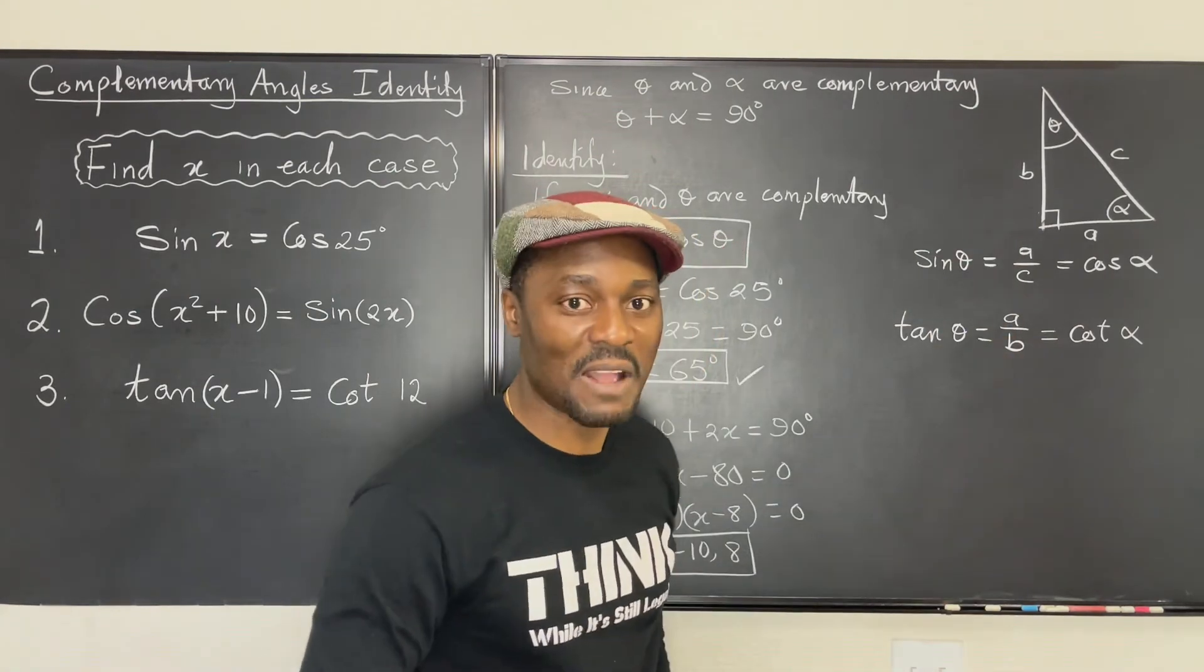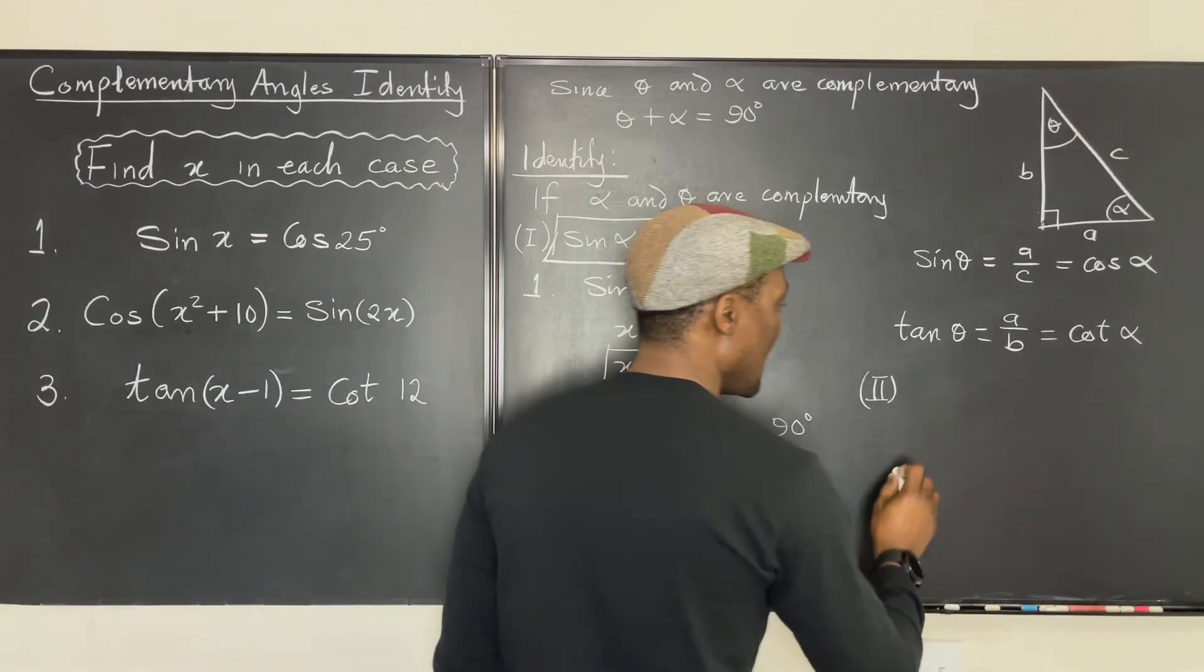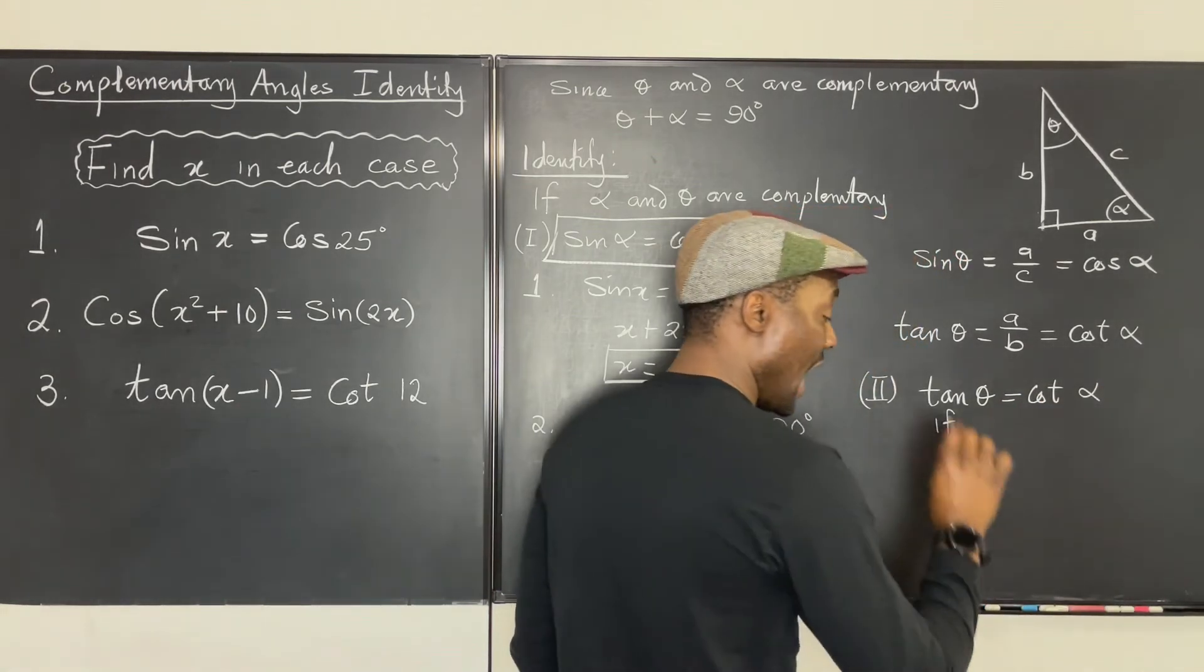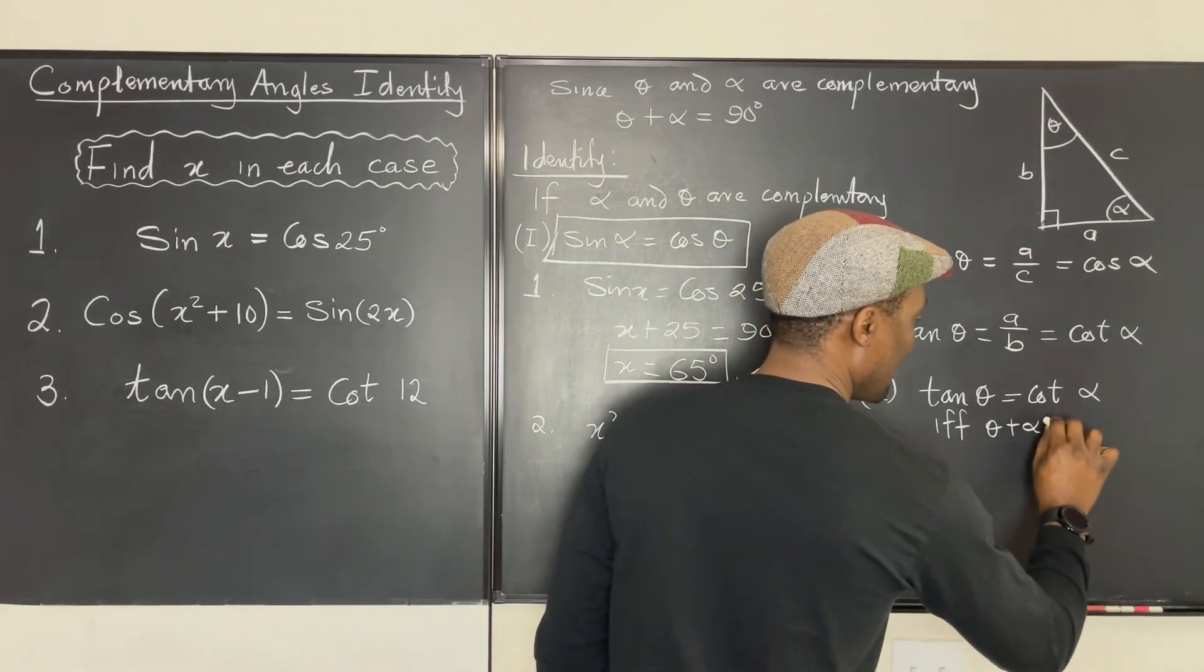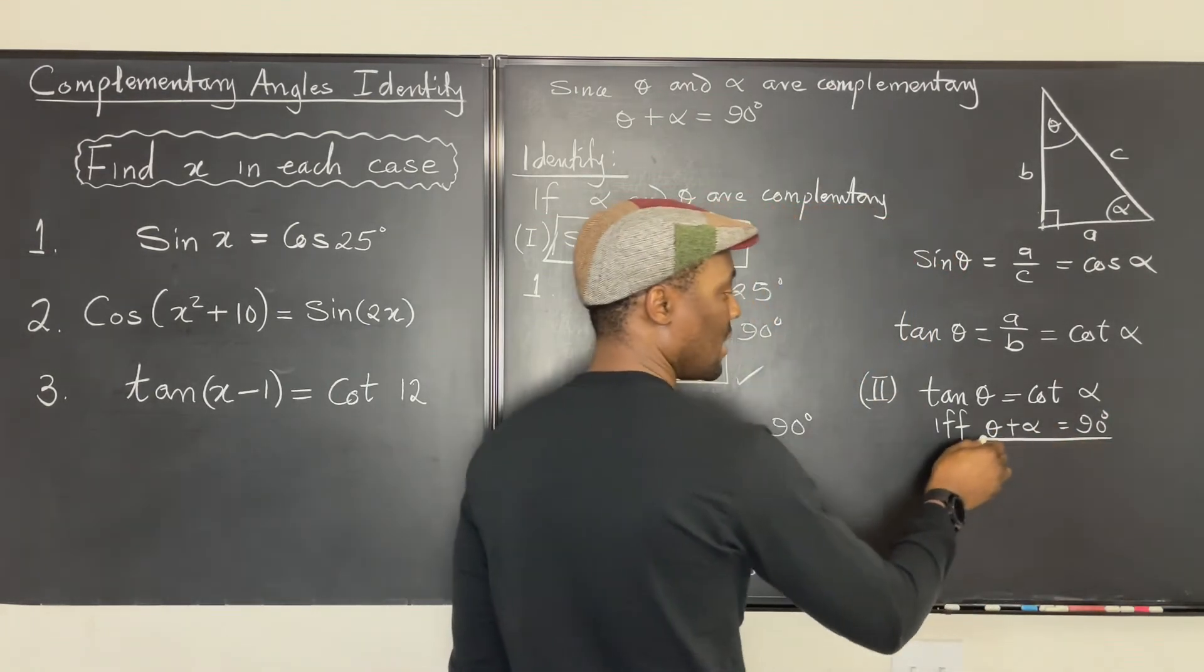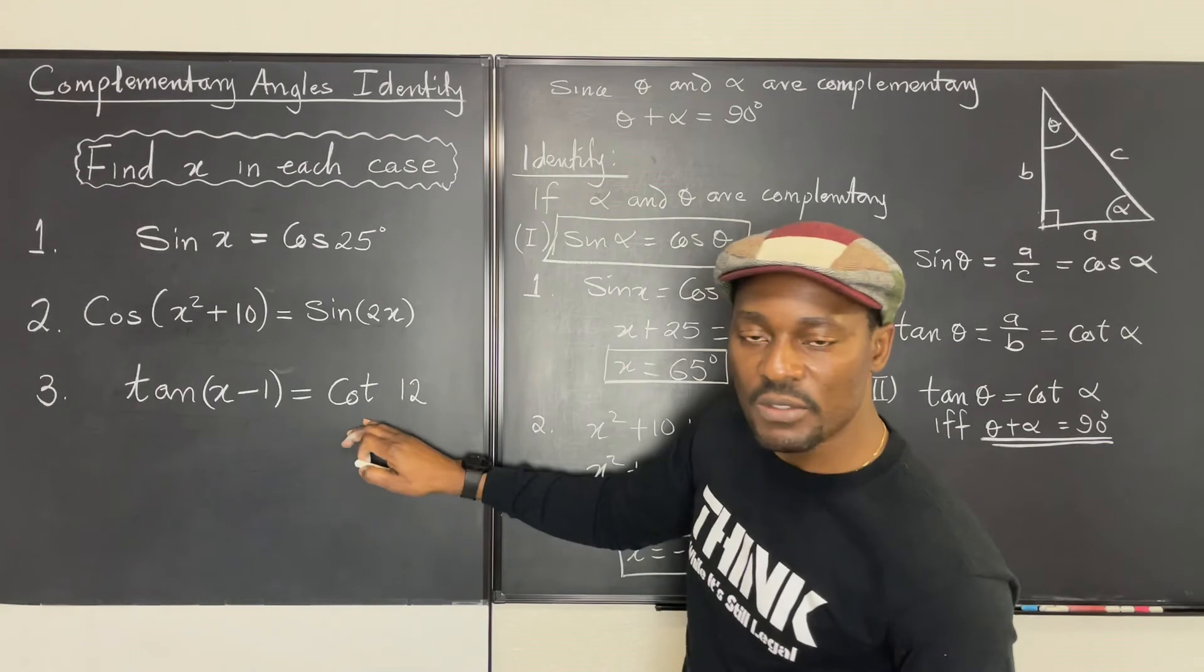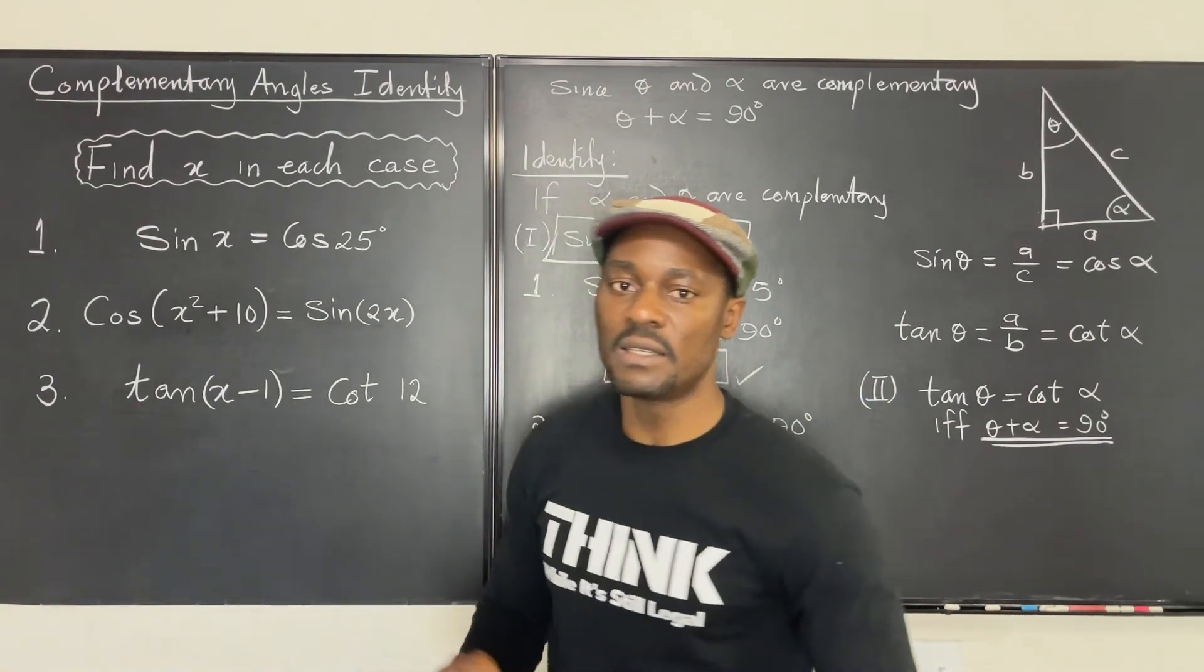So we can also establish a second identity, which I'm going to write here and say that tan theta is equal to cotangent of alpha if and only if theta plus alpha will be equal to 90 degrees. It's important that this condition is met. They're complement of each other. And we can use that now to solve this question. So tangent will be equal to cotangent if this and this are complements, that is, they add up to 90 degrees.